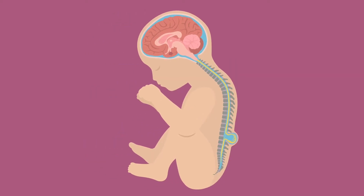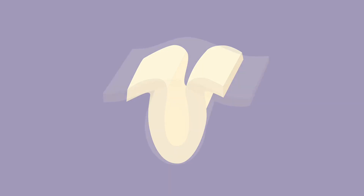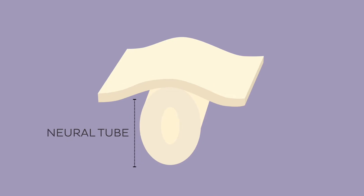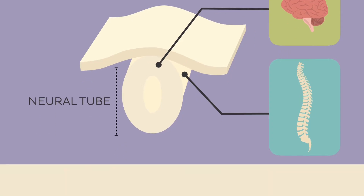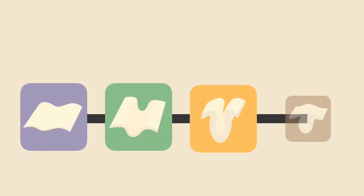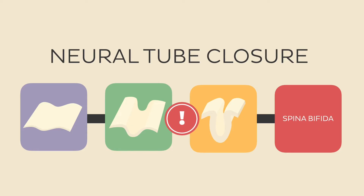But how does this happen? Well, our brain and spinal cord start their development from a single structure that looks like a plate — this is called the neural plate. You can imagine the neural plate as a sheet of paper. This paper starts to fold in half like a hot dog bun. The folded paper is now a tube, which we call the neural tube. The top part will become your brain and the long bottom part will become your spinal cord. The process of folding and closing of the plate is called neural tube closure. If something goes wrong during this process, it results in a neural tube defect, one of the most common being spina bifida.